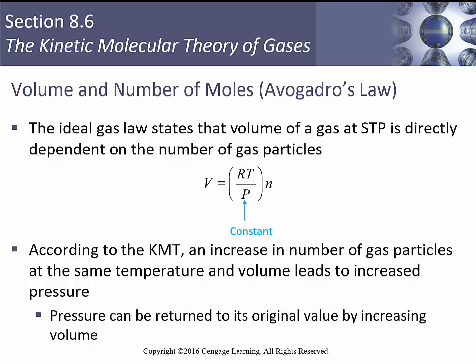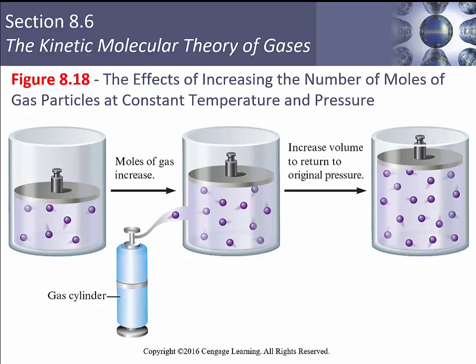The ideal gas law states that the volume of the gas is directly dependent on the number of gas particles, so volume is proportional to N, with RT and P as constants. According to kinetic molecular theory, an increase in the number of gas particles at the same temperature and volume leads to increased pressure because more particles are hitting the walls. The original pressure can be restored by increasing the volume — increasing area brings pressure back down.